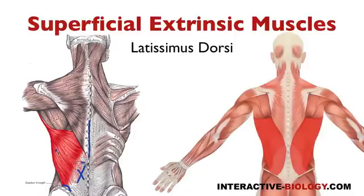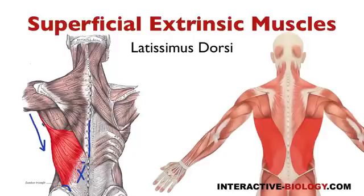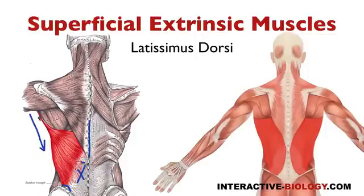When that muscle contracts, you can see it has a wide origin below and the insertion is up at the humerus. One of the things it can do is cause adduction of the arm. Because of how it spirals around and comes to the floor of the intertubercular sulcus, it can also cause internal rotation of the arm. And depending on how it contracts, it can also cause extension of the arm.